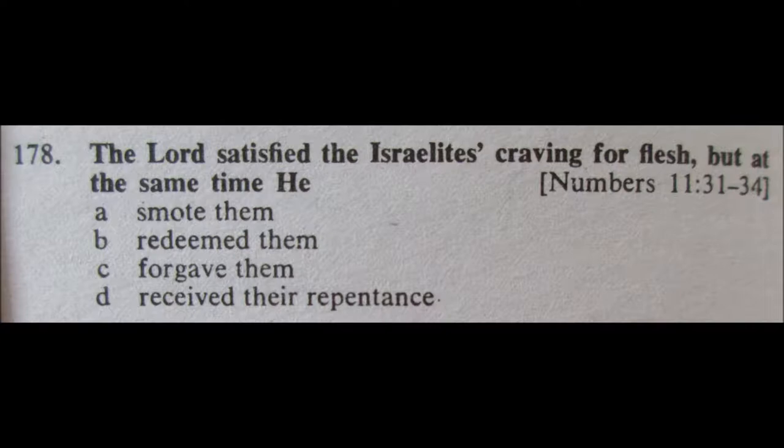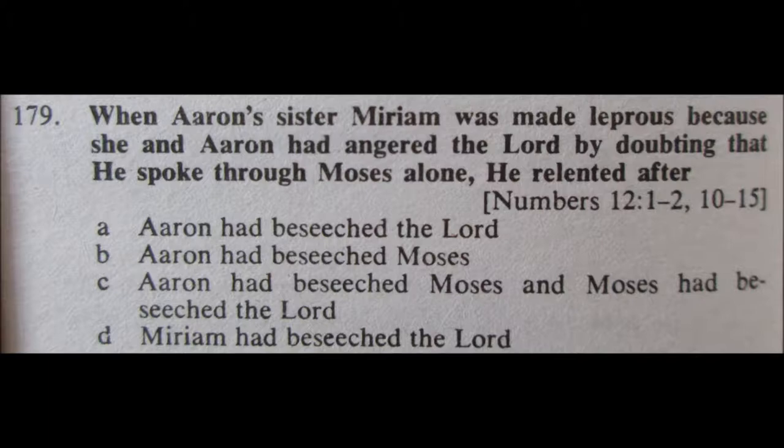179. When Aaron's sister Miriam was made leprous because she and Aaron had angered the Lord by doubting that he spoke through Moses alone, he relented after: A, Aaron had beseeched the Lord; B, Aaron had beseeched Moses; C, Aaron had beseeched Moses and Moses had beseeched the Lord; or D, Miriam had beseeched the Lord.